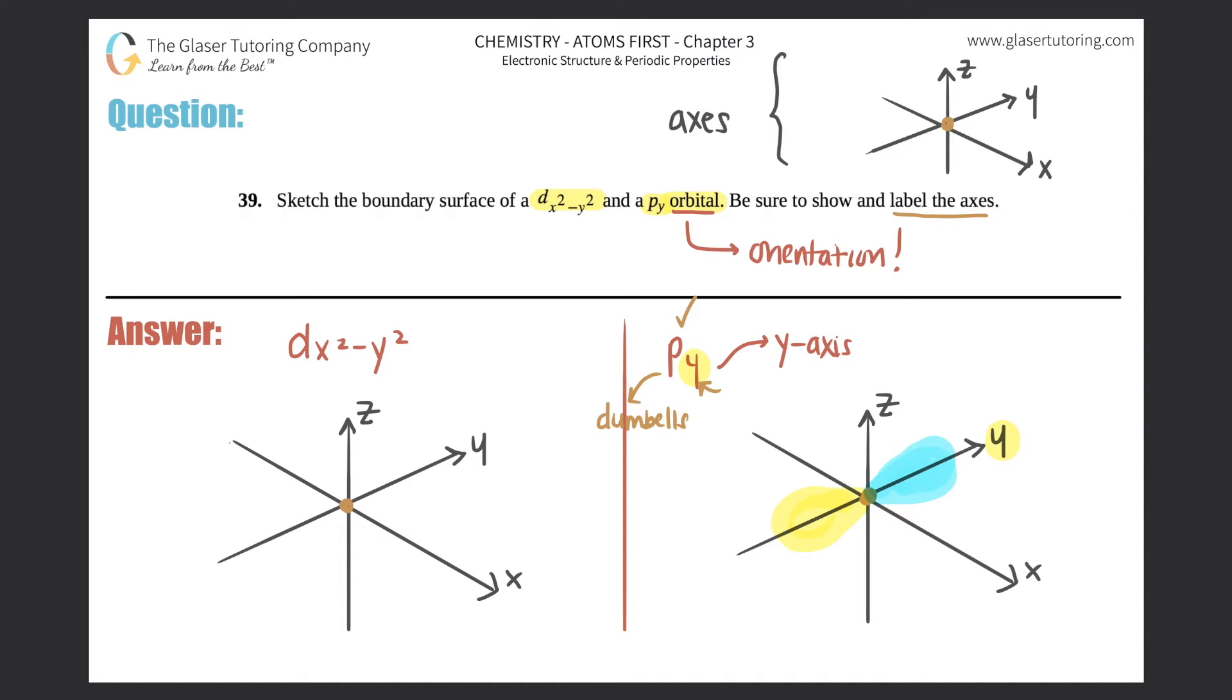Now we have to draw this one, the big boy, the d. And they tell us that it's x squared minus y squared. The squared represents two, all right, so just means that you're going to be drawing the x twice and the y twice, and we have the same type of connotation.